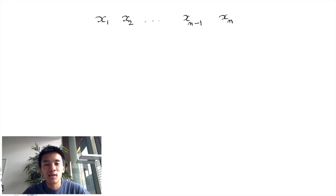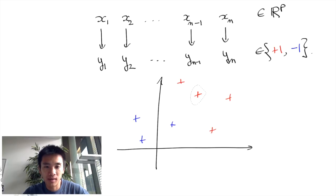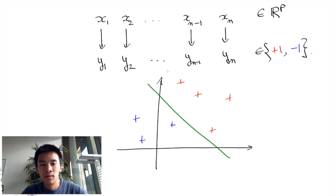Let's call X1, X2, until Xn the p-dimensional feature vectors and Y1 until Yn labels with values in plus or minus 1. For now let's assume that there exists a separating hyperplane that is a linear classifier that correctly predicts the labels of the training data set.